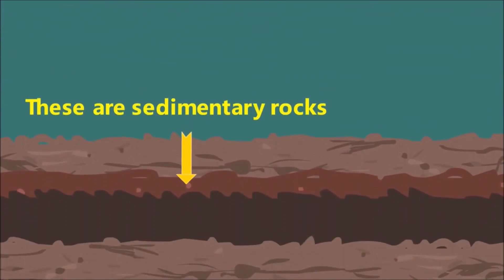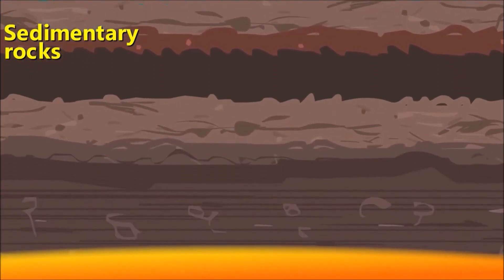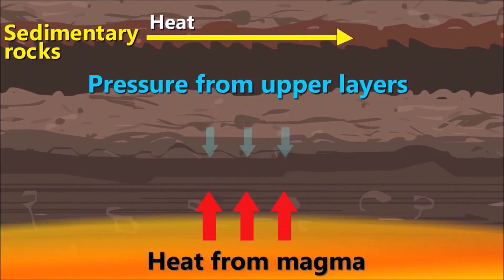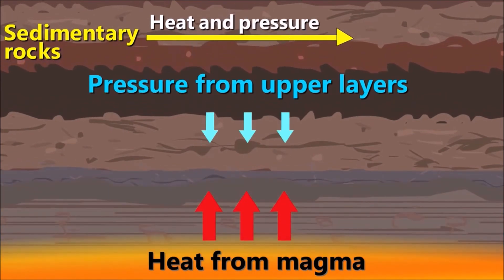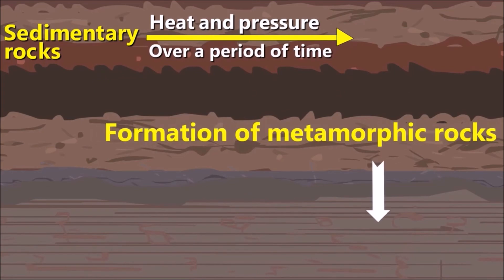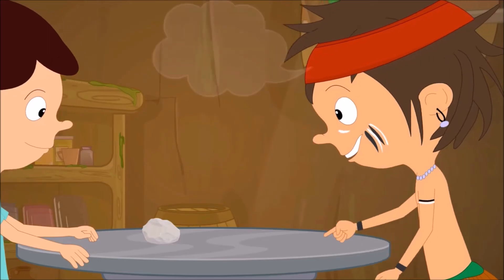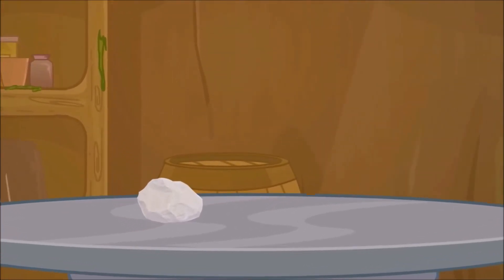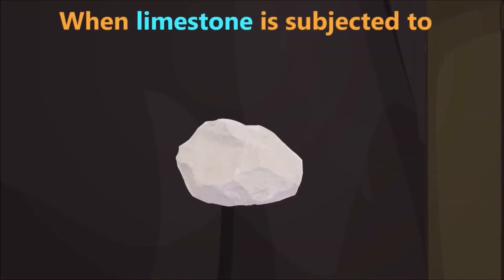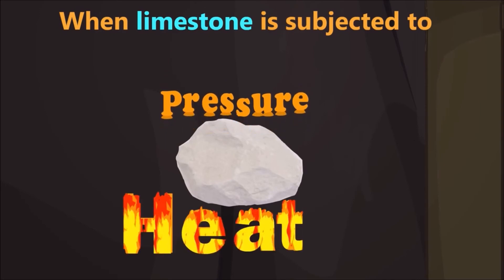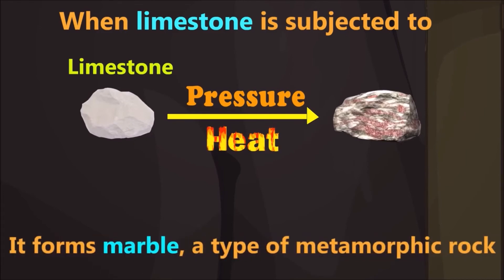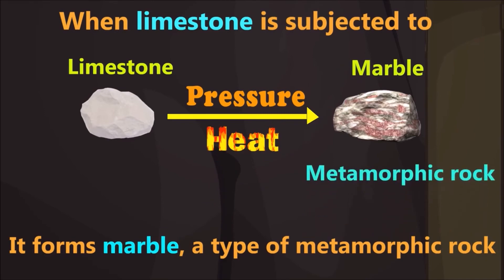As discussed earlier, these are sedimentary rocks. When heat from the earth's crust and pressure from the upper layers is subjected to sedimentary rocks over a period of time, it creates a new type of rock called metamorphic rock. For instance, limestone is an example of a sedimentary rock. When limestone is subjected to pressure and heat, it produces a different type of stone with different texture and properties, commonly called marble — a type of metamorphic rock.